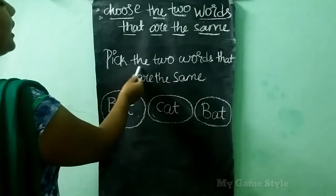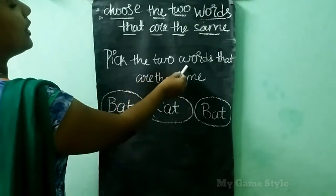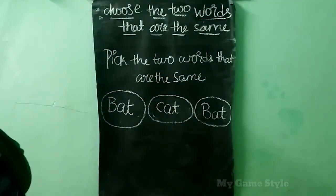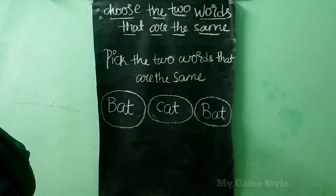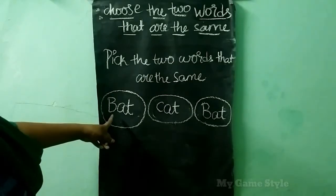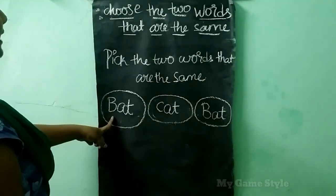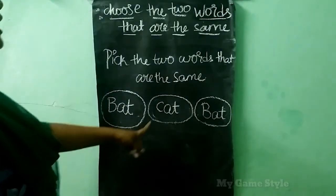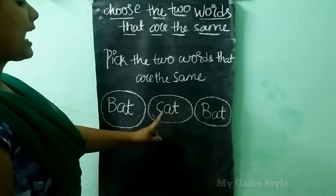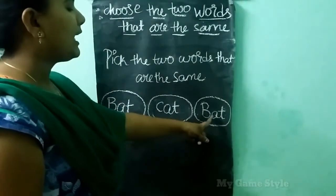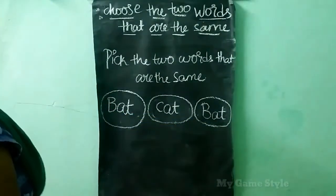Here, pick the two words that are the same. We have given some words children. So we need to identify same words. Let's see. Here, this is Bat, B-A-T, Bat. Here, C-A-T, Cat. Here next B-A-T.